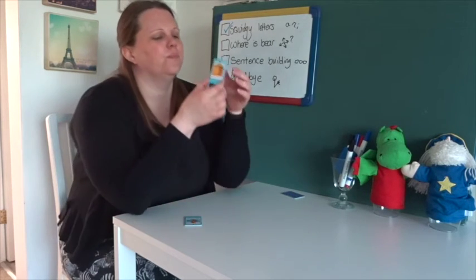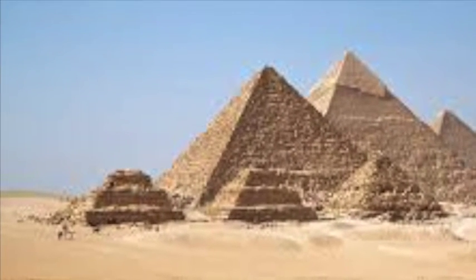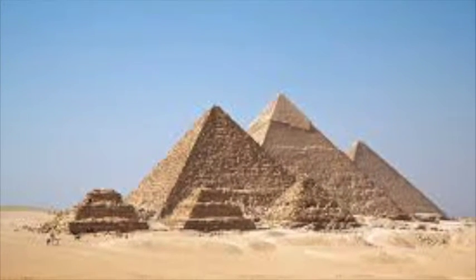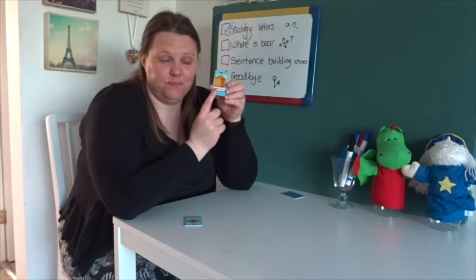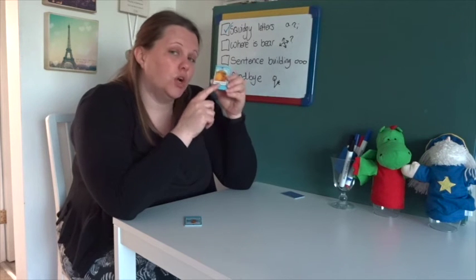Let's do another one — what about this one? Where is bear? Do you recognize anything in the picture? Those triangles have got a special name — do you know what they're called? Pyramids! Now the pyramids are only in one country in the world — do you know that country? Egypt! So bear is in Egypt. Wow — do you think Egypt is a hot country or a cold country? Something to look at maybe after the lesson.